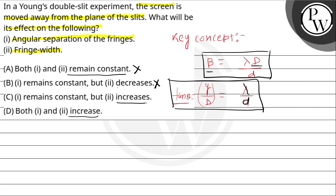So the angular separation of the fringes will remain constant. The incorrect options are ruled out. C is the correct option. The angular separation of the fringes will remain constant but the fringe width will increase. So C is the correct answer.